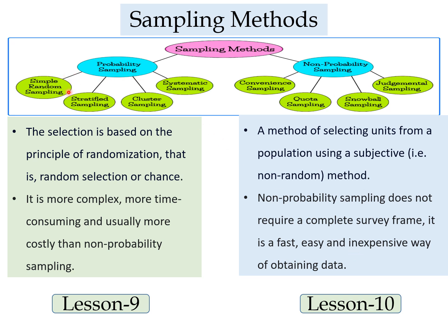Probability sampling is subdivided into four categories: simple random sampling, stratified sampling, cluster sampling, and systematic sampling. Non-probability sampling is divided into convenience sampling, quota sampling, snowball sampling, and judgmental sampling. If you want to know more about probability sampling, go to lesson 9, and for non-probability sampling, go to lesson 10 — links in the description box below.